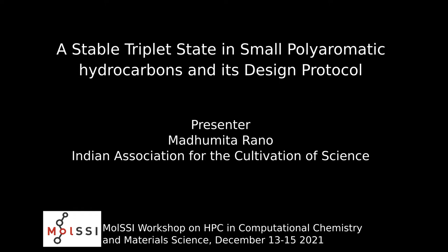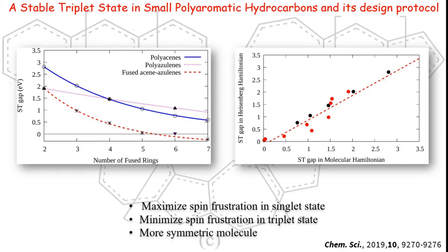Our next presentation is entitled stable triplet state in small polyaromatic hydrocarbons and its design protocol. In the left figure, the singlet-triplet gap is plotted for isomeric polyacines, polyazurines, and fused acine-azurines, calculated with a multireference method. It is very interesting to see that fused acine-azurines have the lowest ST gap among these three.